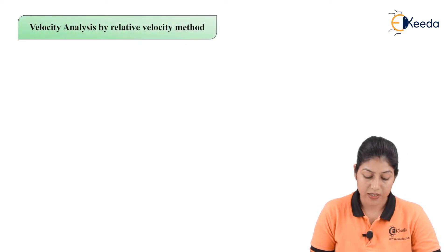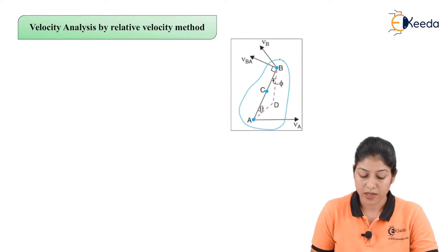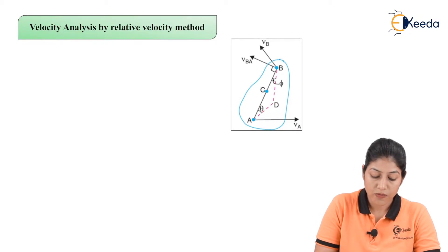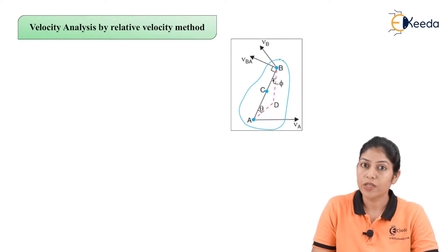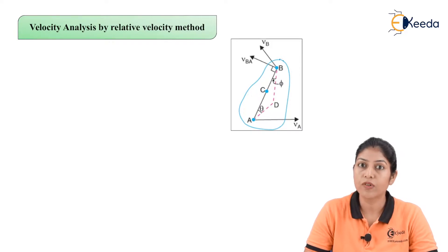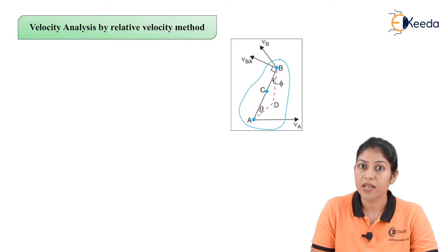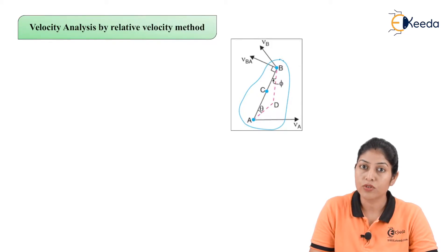Let's start the relative velocity method and the velocity analysis of different points. In relative velocity method we use the concept of relative velocity — the velocity of any particular point with respect to another point. So if we are considering two different points and both have different velocities, one point will move with respect to another. This method depends on one condition: if we want to define the magnitude of velocity at a point, the reference point should have both magnitude and direction of velocity.